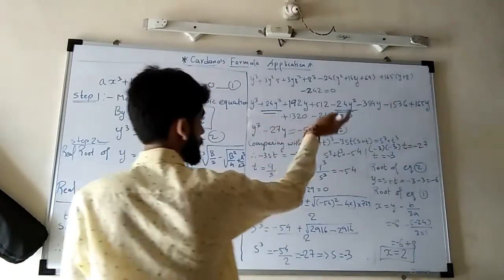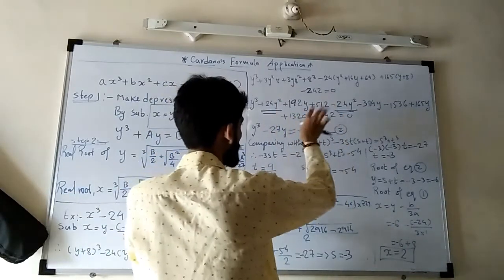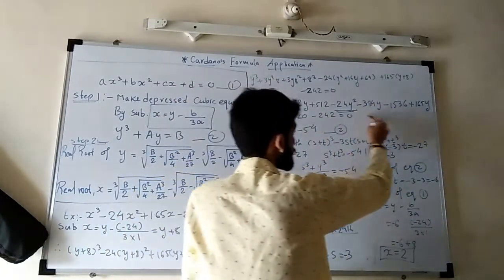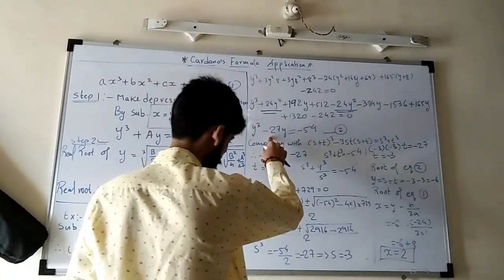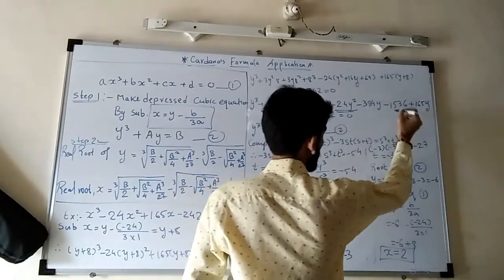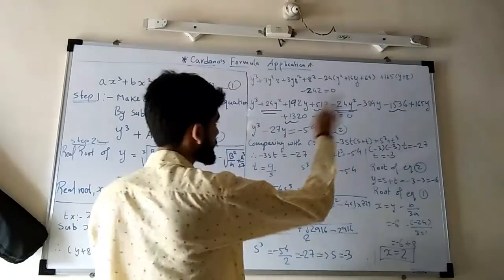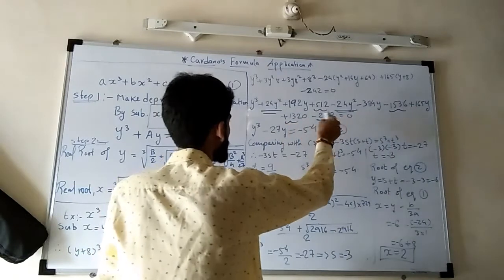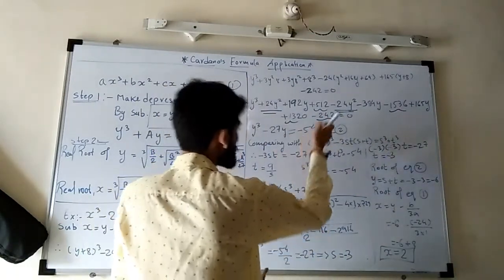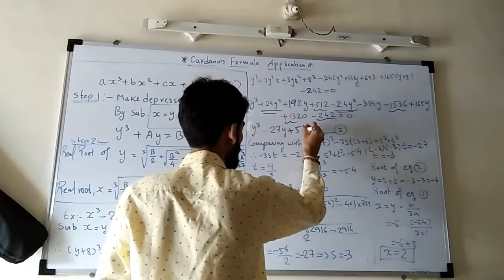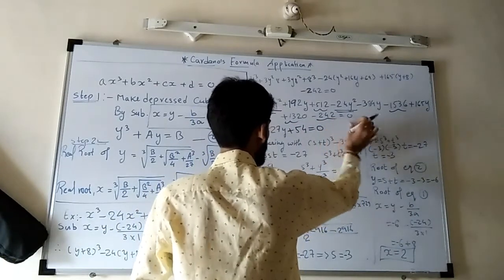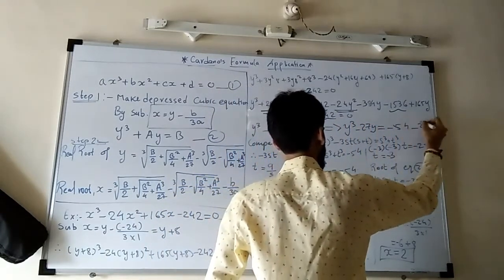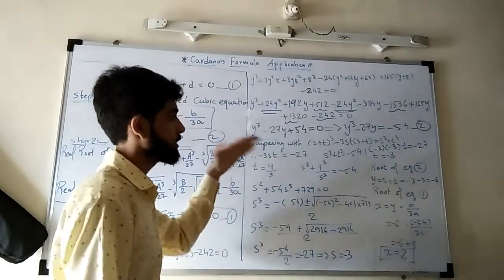After simplifying: we have y³, the y² terms cancel, and for the y terms: 192 minus 384 plus 165 gives minus 27y. The constant terms are 512 minus 1536 plus 1320 minus 242, which gives plus 54. So the equation becomes y³ minus 27y plus 54 equals 0, or y³ minus 27y equals minus 54. This is our depressed cubic equation — the first step is complete.